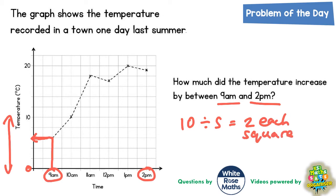So every time we go up a square on the side, we're going up 2 degrees in temperature. In other words, we're going 0, 2, 4, 6, 8, 10, and we can keep going 12, 14, 16, 18, 20, and the next one at the top would be 22.